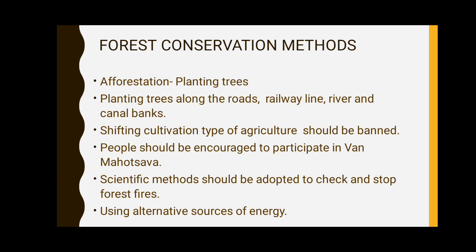Scientific methods should be adopted to check and stop forest fires. In some areas, forests are depleted because of forest fires, so to prevent forest fires we have to adopt some scientific methods to stop forest fires and also check how much forest fire is occurring. Next, using alternative sources of energy — many people use wood as fuel to cook food, so we should use alternatives like LPG and natural gas, which are eco-friendly, don't cause environmental pollution, and also help in conserving forests.